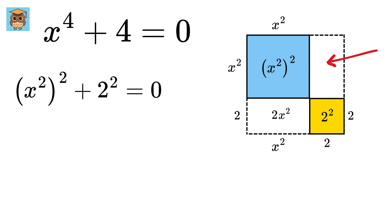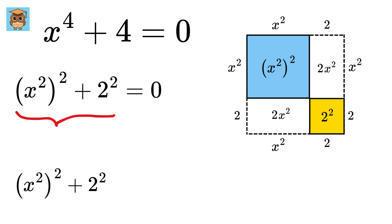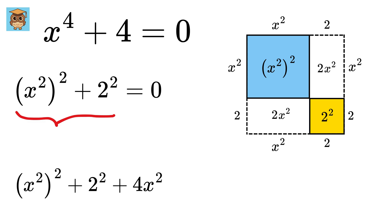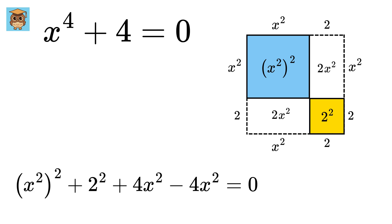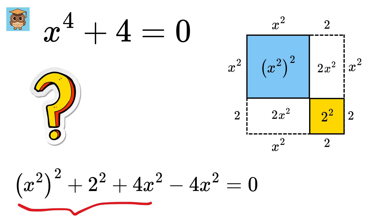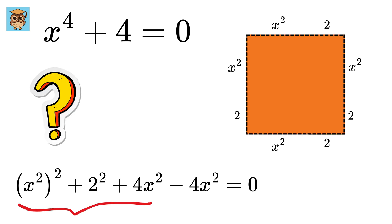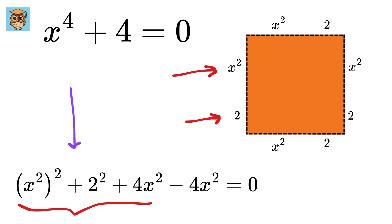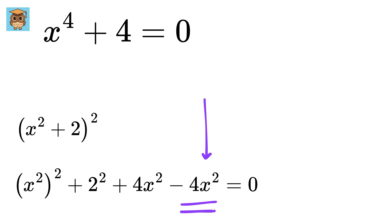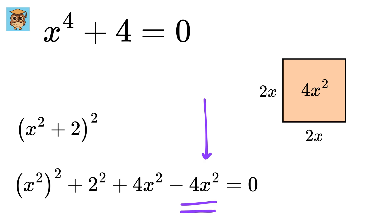Same goes for this part — this side is 2 and this side is x², so this area will also be 2x². So in this equation, we can add 2 + 2, or 4x². But we also have to subtract 4x², so that the original equation is not changed. Now, this bigger square will have the side length as x² + 2, so this part will be the same as (x² + 2)². And then we have this minus 4x². If we have a square of side 2x, then its area will be 4x², so this will be (2x)².